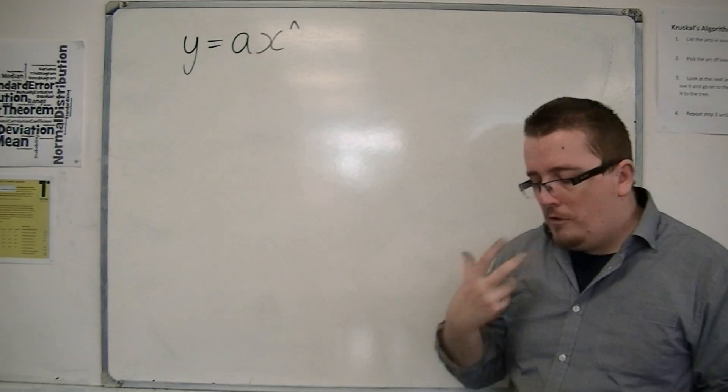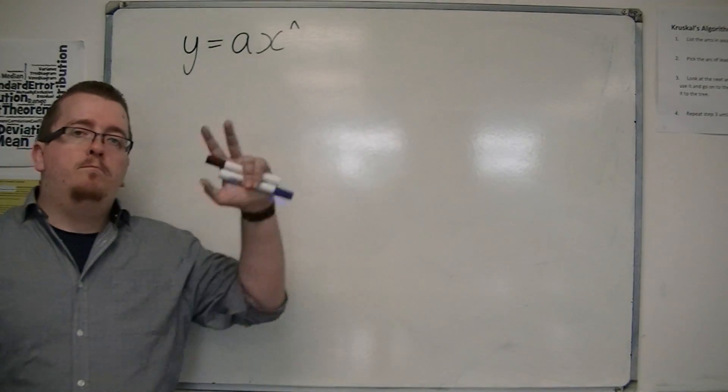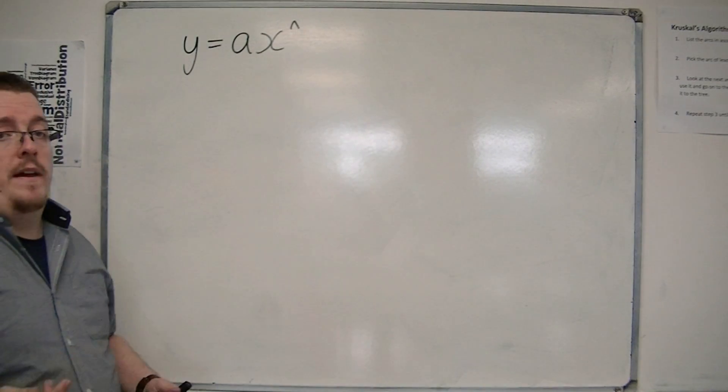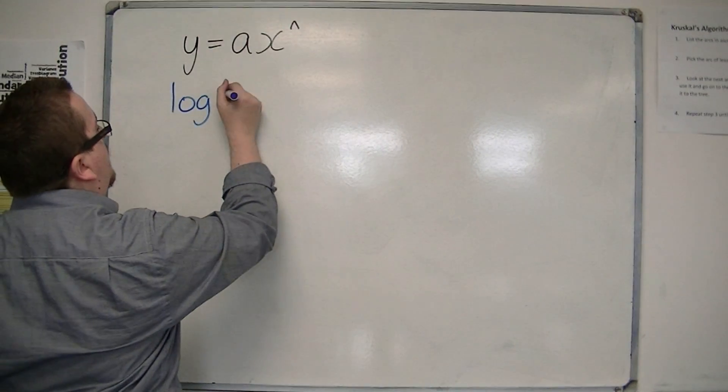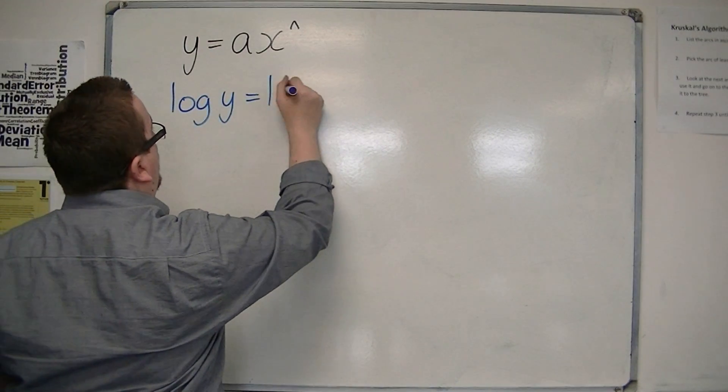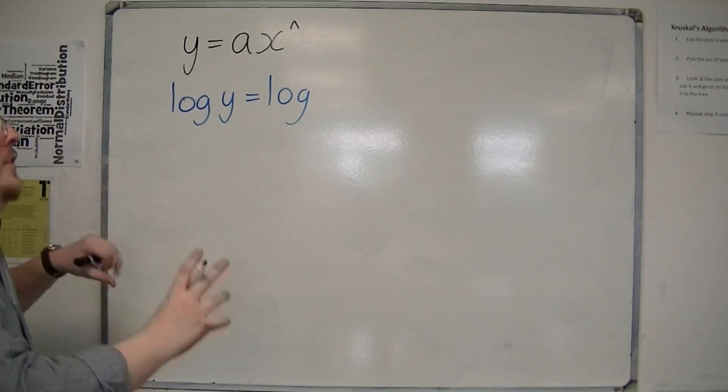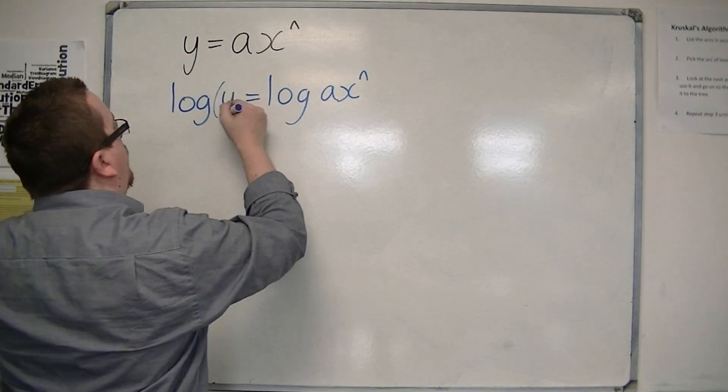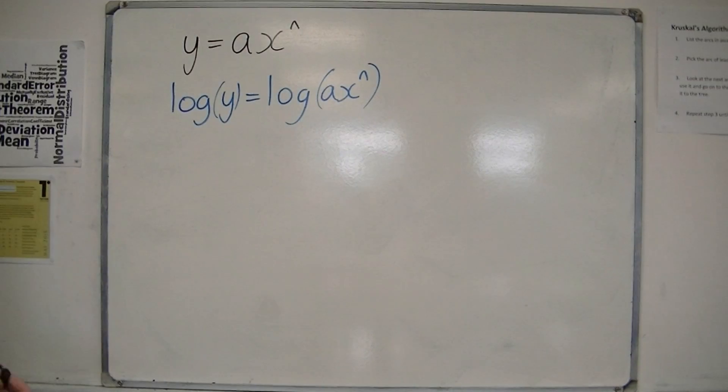So the process that we go through involves logging both sides of the equation. And what I mean by that is that if I log both sides, I'm effectively doing a logarithmic function of both sides or putting a log in front of both. So I've got log of y is equal to log of ax to the n.